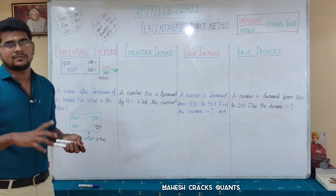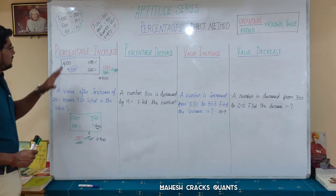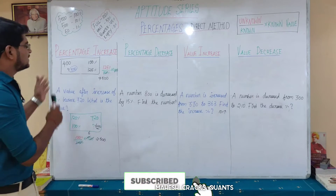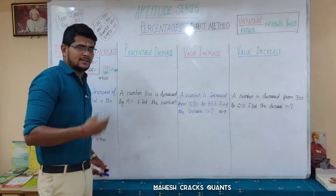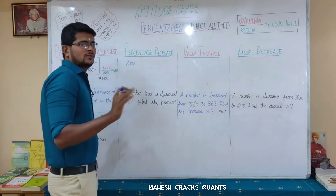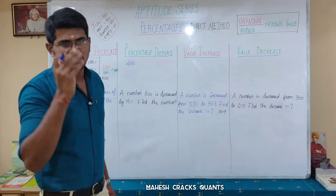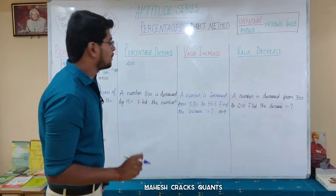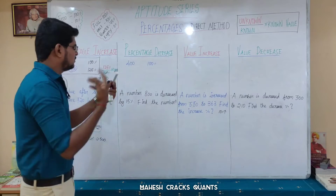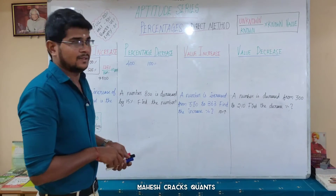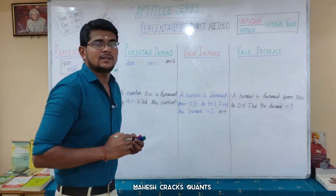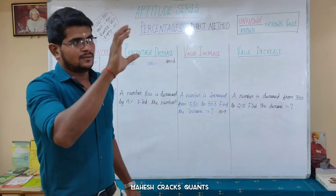This is the percentage increase. For percentage decrease, the method is the same. The original value is always 100%. If you decrease by a percentage, for example a 40% decrease, the new percentage becomes 60%. So 100% is the starting value, and 60% is the decreased value.